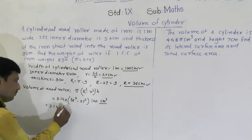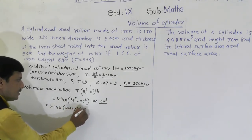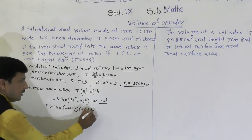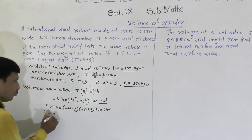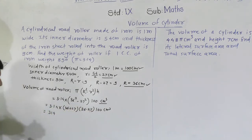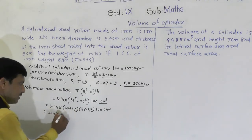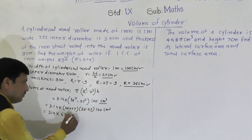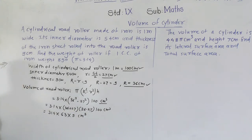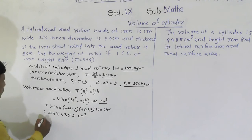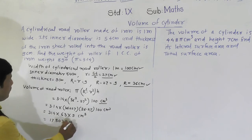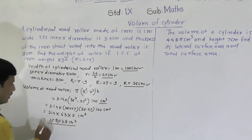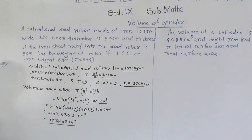Using the difference of squares: 36² − 27² = (36+27)(36−27) = 63 × 9. So V = 3.14 × 63 × 9 × 100 cubic centimeters. This gives us a volume of approximately 178,038 cubic centimeters.